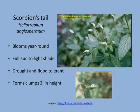Another one: scorpion's tail. This one blooms year round and has these unique white flowers that come out like a scorpion's tail. It's drought and flood tolerant, so it can handle a wide range of soil moisture. It forms clumps about three feet in height.